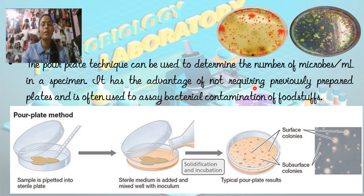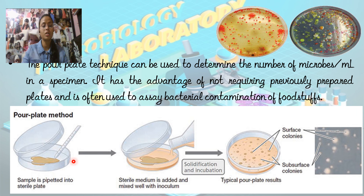It is a technique that can be used to determine the number of microbes per mL in a specimen. It has the advantage of not requiring previously prepared plates and is often used to assay bacterial contamination of food. In pour plating, colonies grow on the surface as well as on the subsurface inside the plate, because the sample is pipetted into the sterile plate, then sterile molten agar medium is poured in with the inoculum, mixed well, and allowed to solidify before incubation.